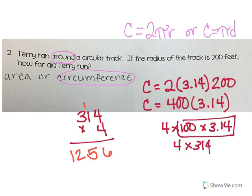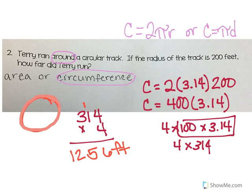So 1,256. What units? Feet. Is that square feet? No, because she's running around a track — she's not covering it up, it's just feet around it. So she went 1,256 feet around the track. My answer is 1,256 feet.